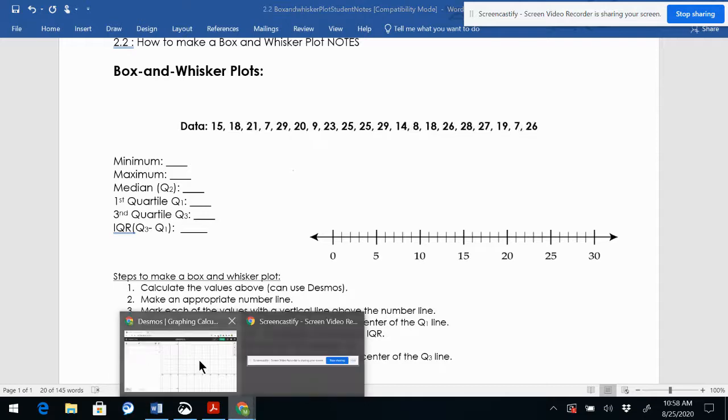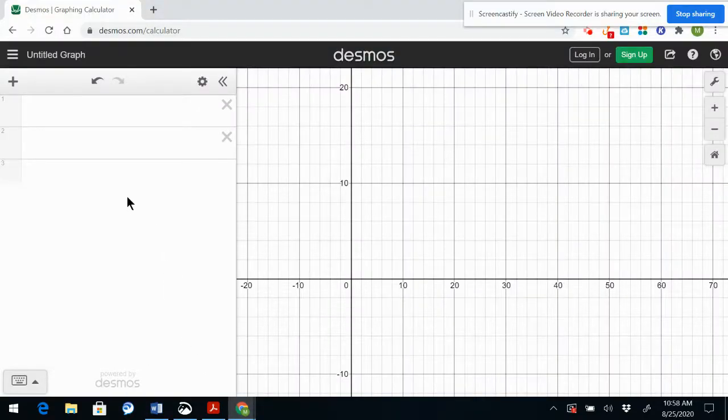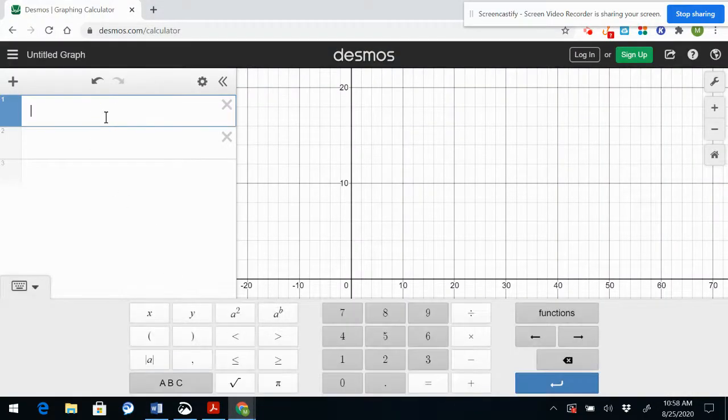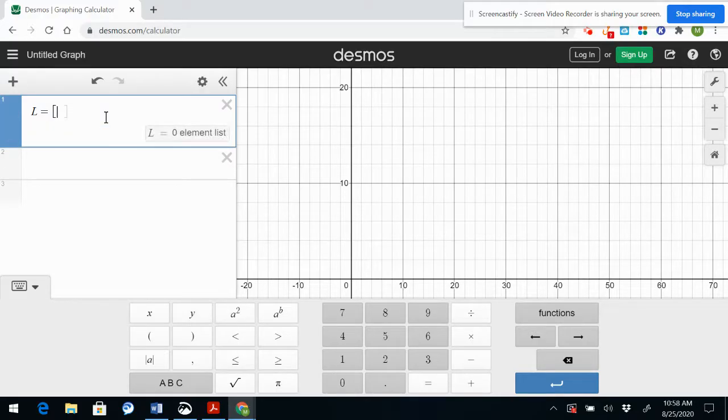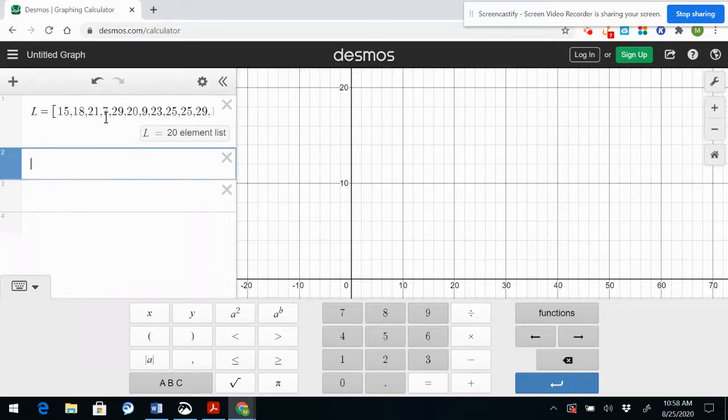I go over to desmos.com and I'm going to enter my data in the first box. I need to call it something so you can call it whatever you want. I'm going to call it capital L and equals. For a data set you need to use brackets to designate it as a data set, and I do ctrl v paste and I've entered my 20 elements in my data set.